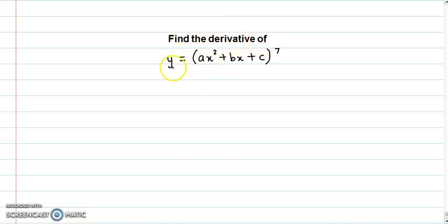Find the derivative of y = (ax² + bx + c)⁷.